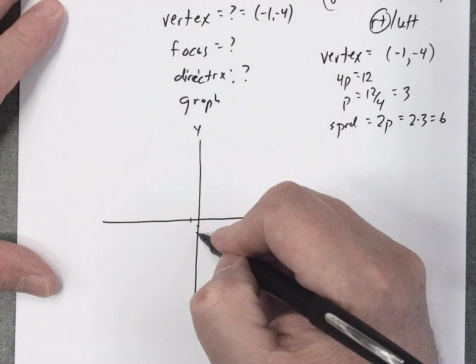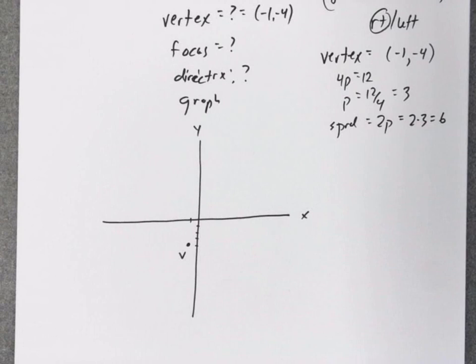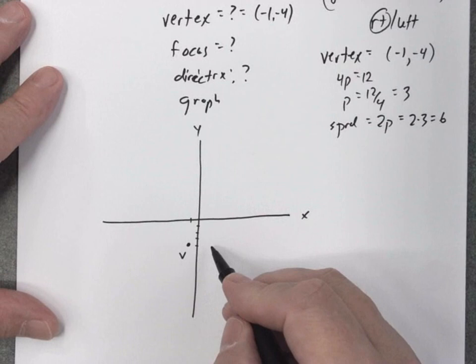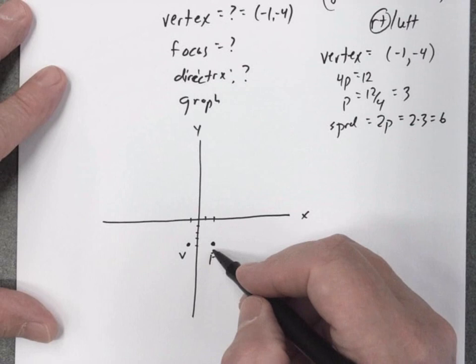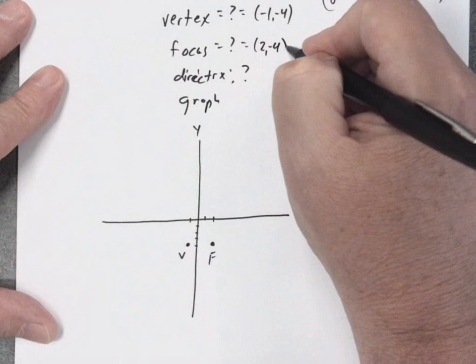So the vertex, (-1, -4). Now we know it's going to go to the right. It's going to look like this. So the focus is going to be to the right, and I'm going to move a distance 3. So therefore, the focus is going to be at (2, -4).